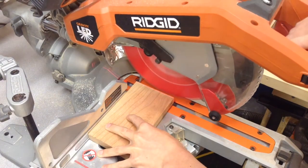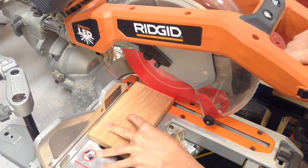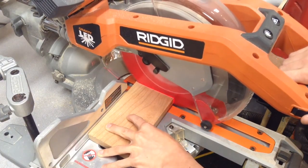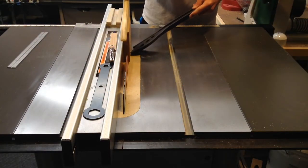Alright so I'm going to start off at the miter saw and I'm just going to clean up this one edge. And now I'm going to re-saw this piece at the table saw.